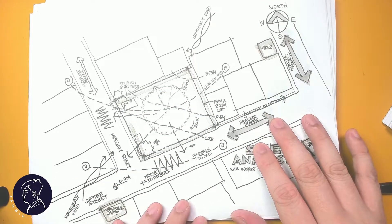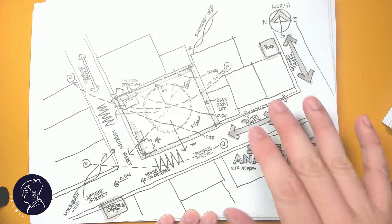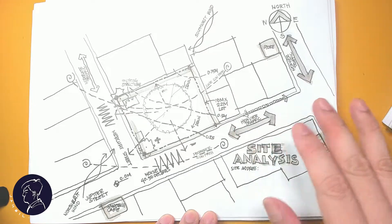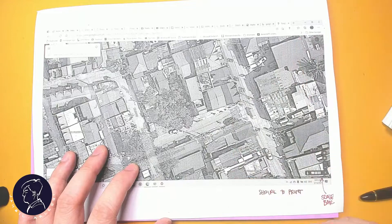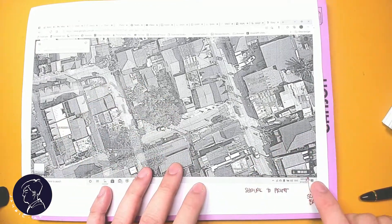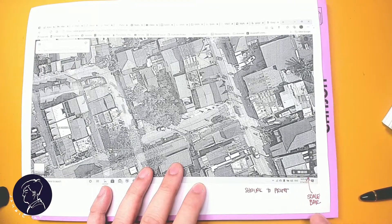So this is the final drawing that I've done, but it went through processes before I was able to do this final drawing. The first thing that I did was take a satellite view from Google Maps and make sure that you screenshot with the scale bar from Google Maps that you can see here.